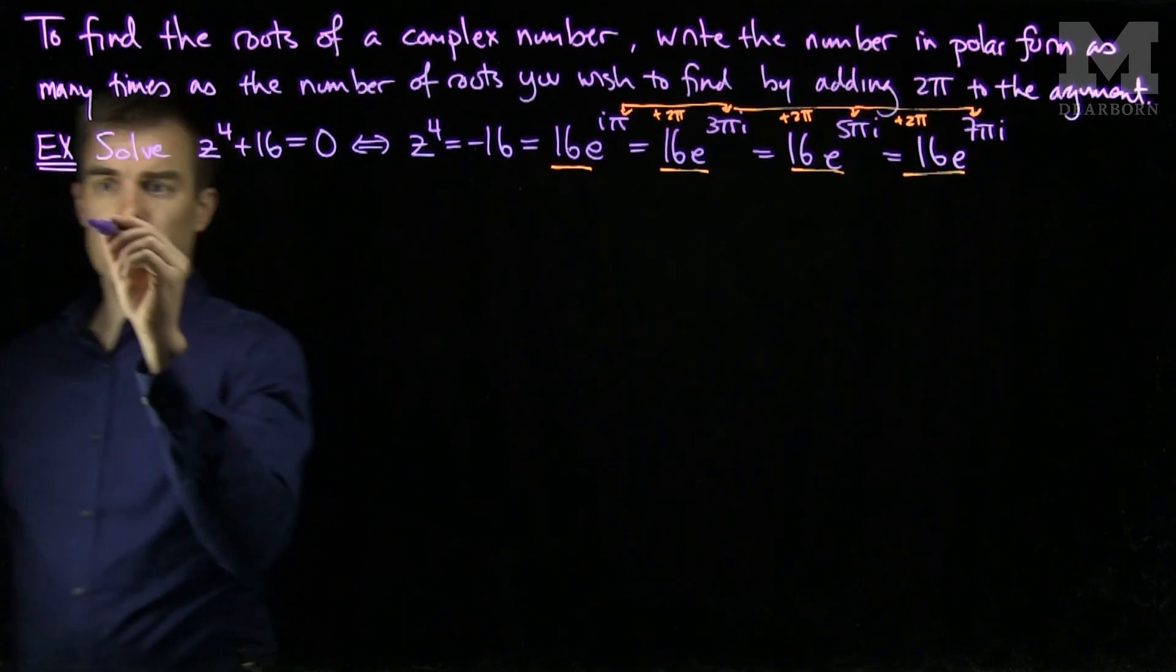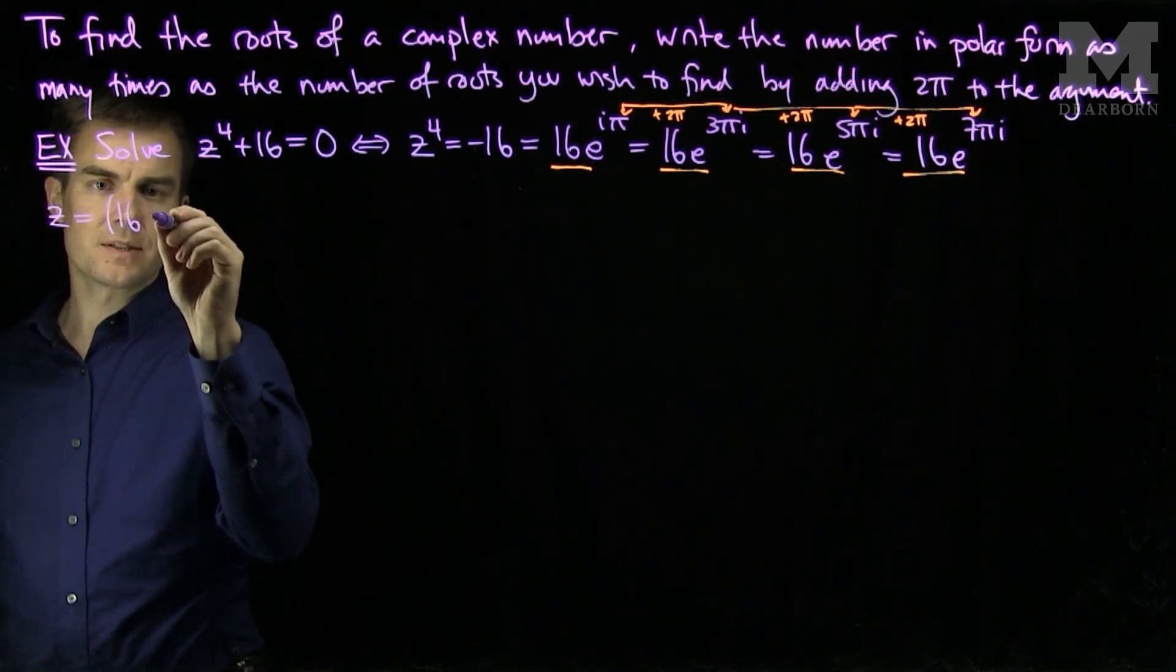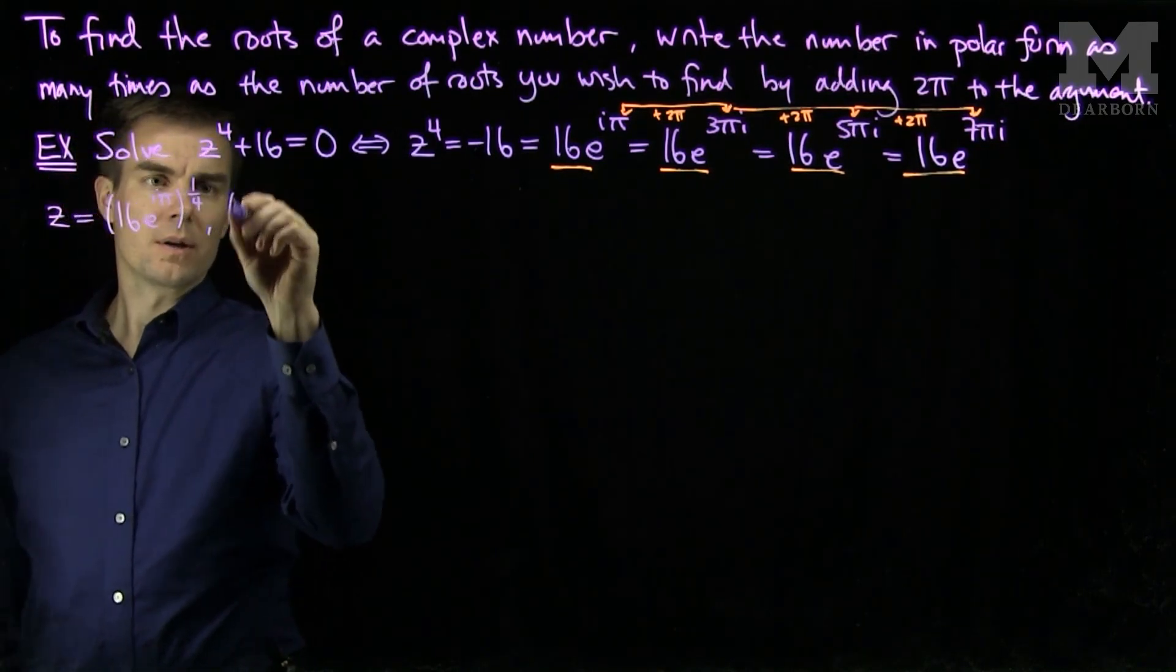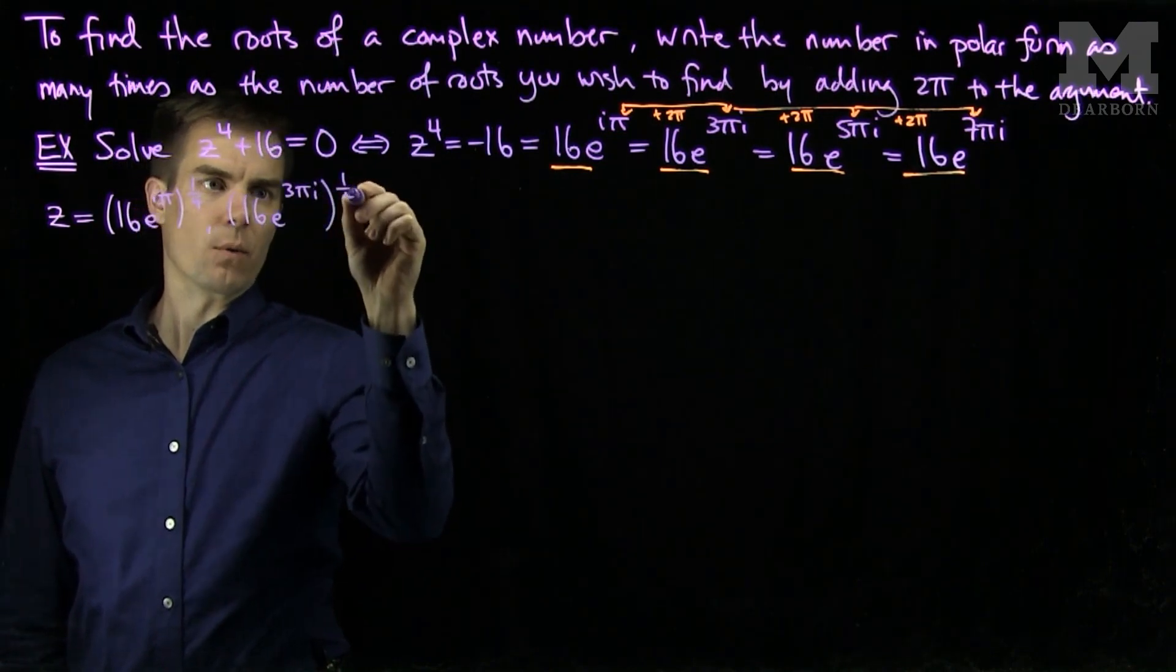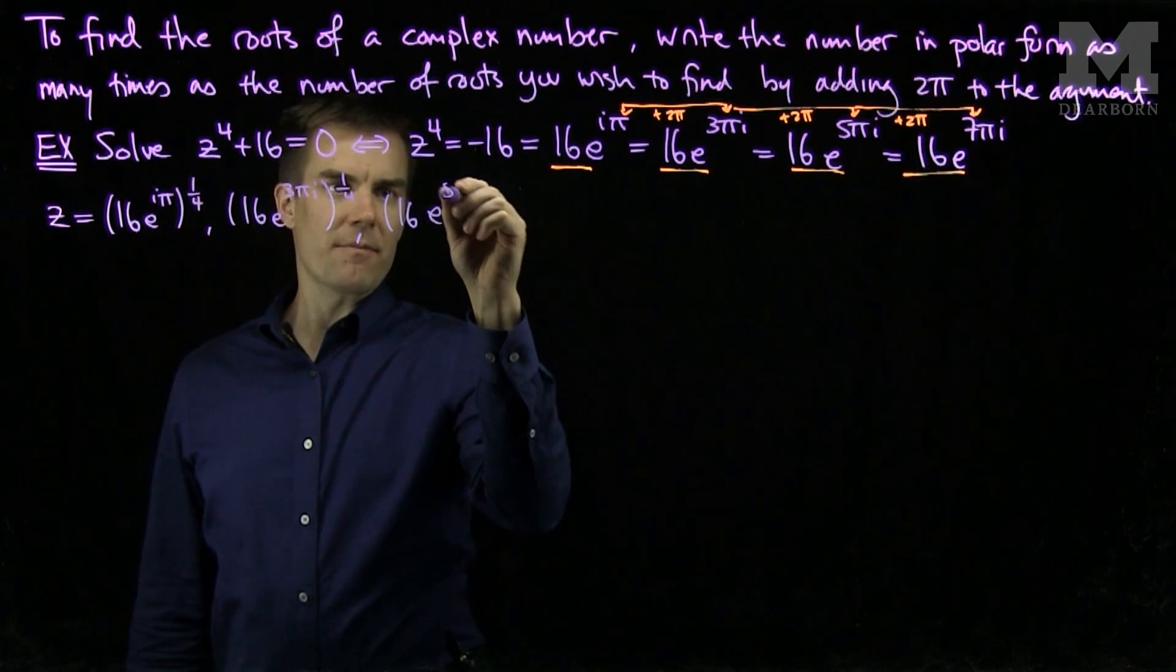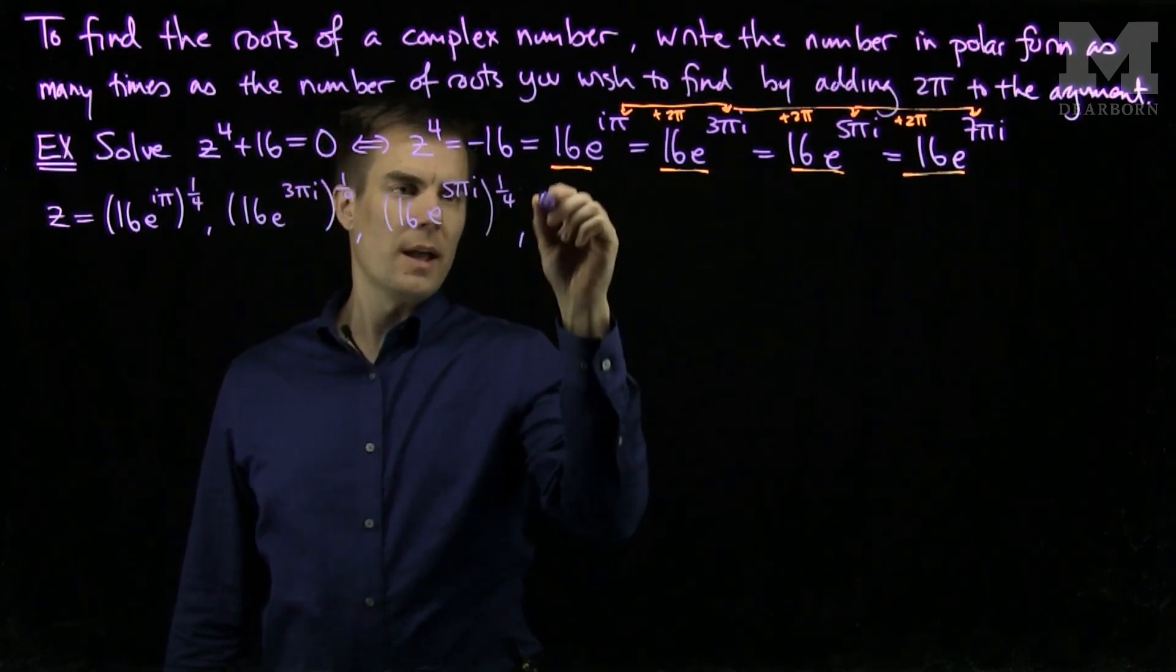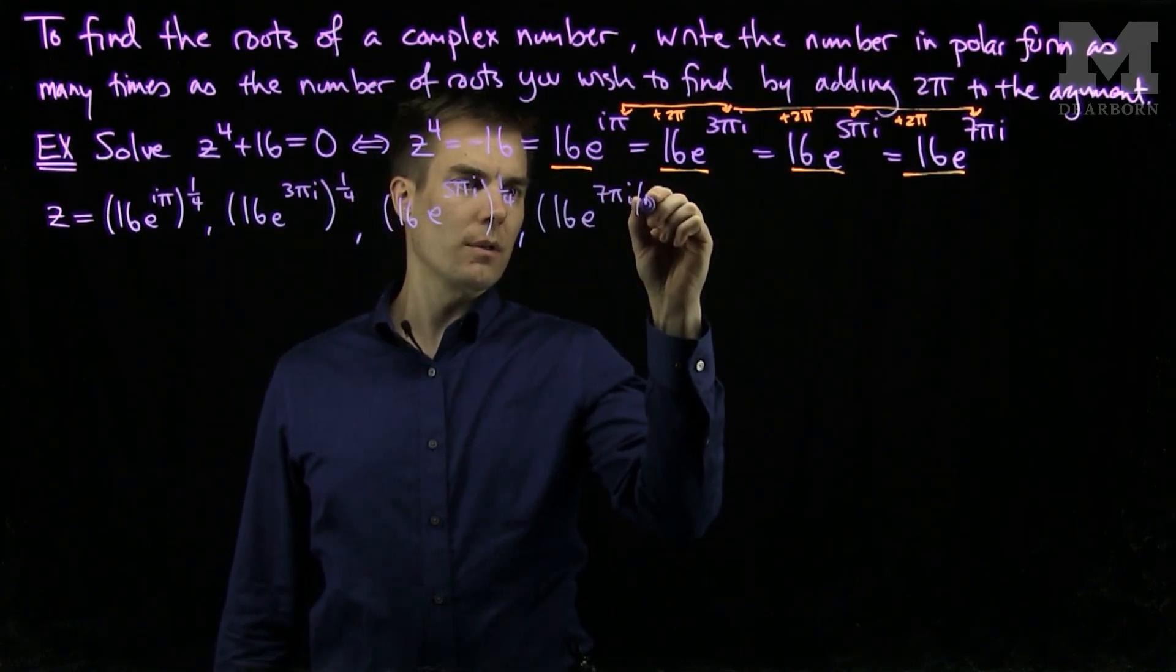Next, I'll take the 4th root of both sides of the equation. So I will have that z is 16e to the iπ to the 1/4, 16e to the 3πi to the 1/4, 16e to the 5πi to the 1/4, and 16e to the 7πi to the 1/4.